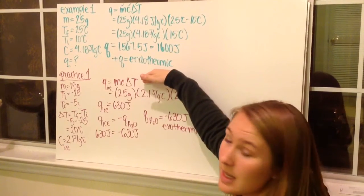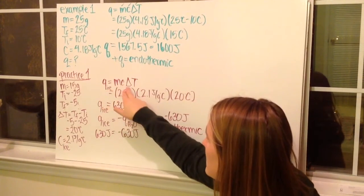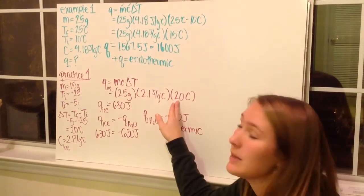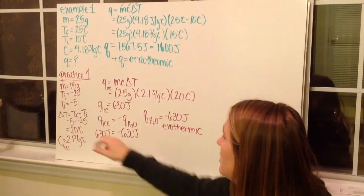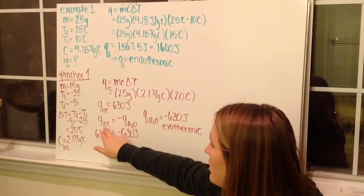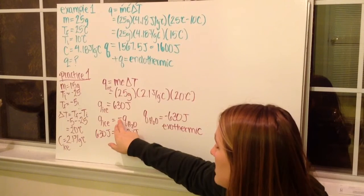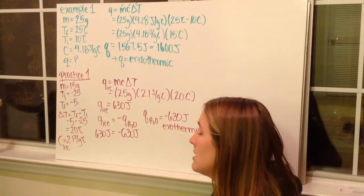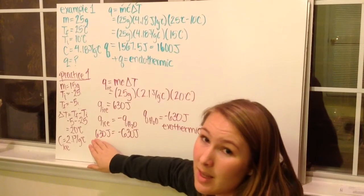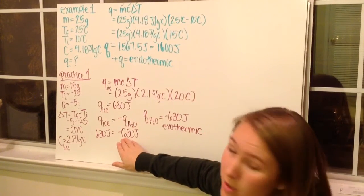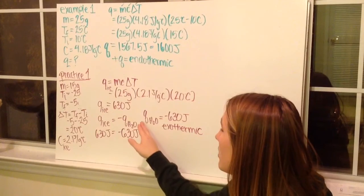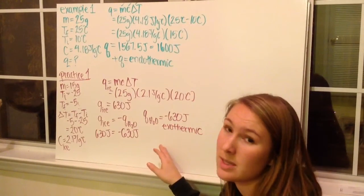Plugging into the specific heat equation: Q of ice equals MC delta T, with M = 15 grams, specific heat = 2.1 joules per gram degrees Celsius, and delta T = positive 20 degrees Celsius. Q of ice equals 630 joules. Since the heat change of ice is equal and opposite to the heat change of water, if 630 joules go into the ice, then 630 joules are coming out of the water. Therefore Q of water is negative 630 joules — it is exothermic.